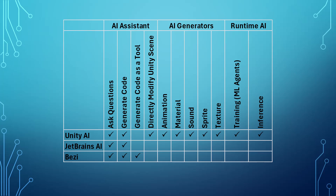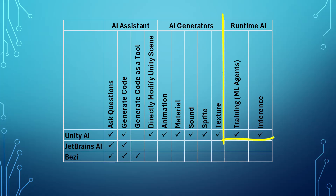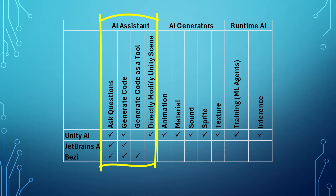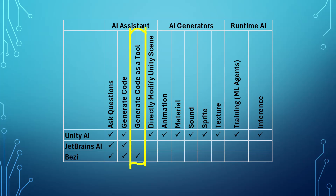This table shows a list of AI capabilities for Unity. Unity AI offers almost all of these. In this video, I'm not going to talk about the runtime AI, although a number of my other videos do focus on ML Agents. Only Unity AI offers the generators, which are quite interesting. They all have AI assistants with similar levels of capability. Only Unity AI is able to directly modify the Unity scene, although Bezzi can generate a script and attach that to a menu, as we will see a little bit later on.